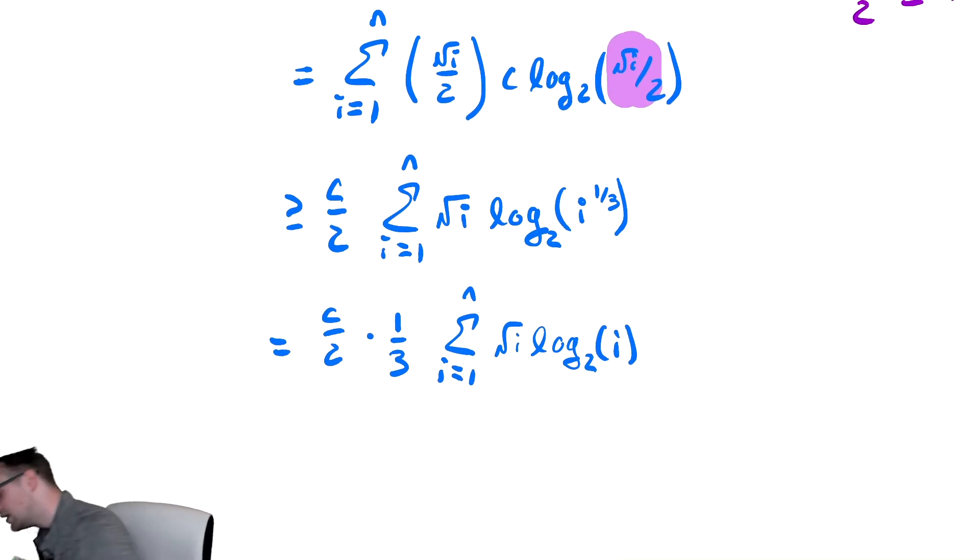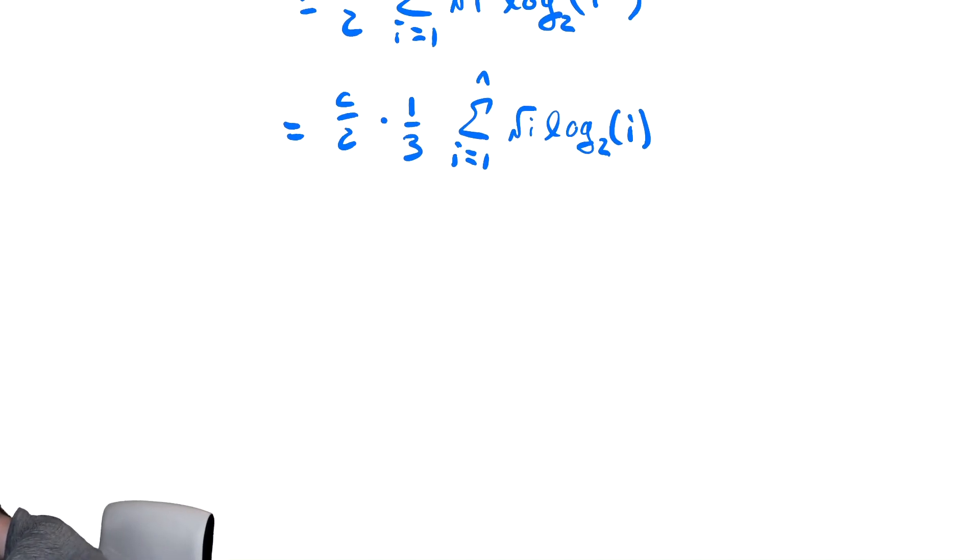And now to bound below, we now have a much nicer looking sum than we would have otherwise. So this is greater than or equal to combine the stuff out front into c over six. And then we have the sum from i equals n over two plus one to n and then we can replace i with n over two. This is radical n over two log base two of n over two.